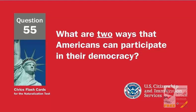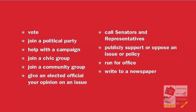What are two ways that Americans can participate in their democracy? Vote. Join a political party. Help with a campaign. Join a civic group. Join a community group. Give an elected official your opinion on an issue. Call senators and representatives. Publicly support or oppose an issue or policy. Run for office.